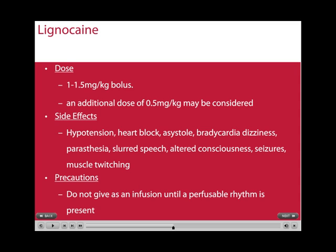The dose of lignocaine is 1 to 1.5mg per kilogram bolus, with an additional dose of 0.5mg per kilogram being considered if it is effective. Side effects of lignocaine include hypertension, heart block, asystole, bradycardia, dizziness, paresthesia, slurred speech, altered consciousness, seizures, and muscle twitching. It should not be given as an infusion until a perfusable rhythm is present.